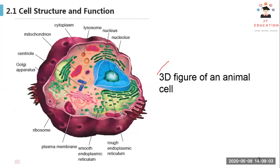Next we have the lysosomes, which contain lysozymes, and then we have the cytoplasm, which is the medium here. Then we have the mitochondrion, and then we have the centriole, Golgi apparatus, ribosomes, plasma membrane. Next will be the smooth endoplasmic reticulum and also the rough endoplasmic reticulum.